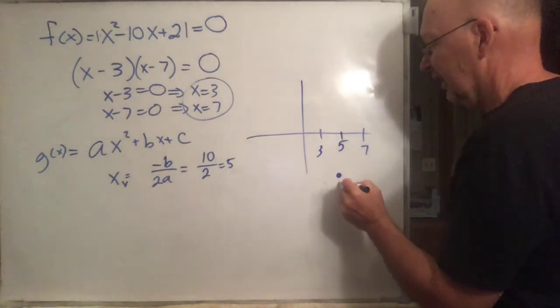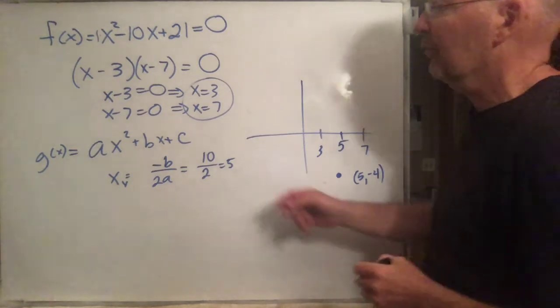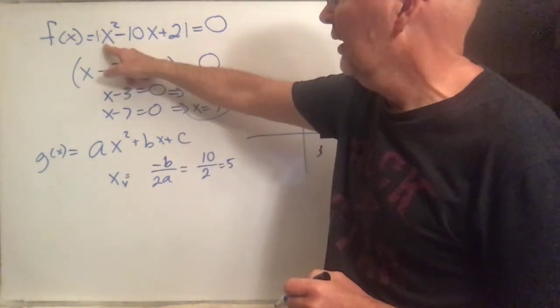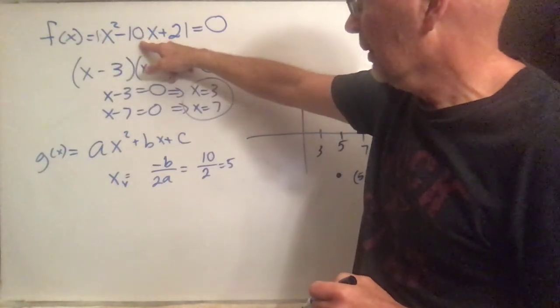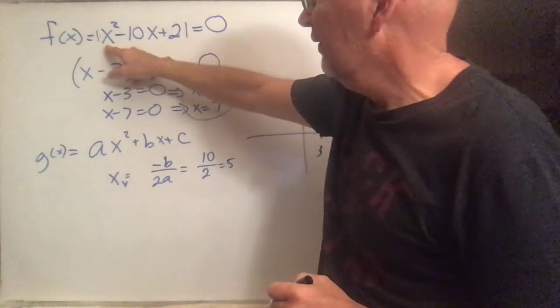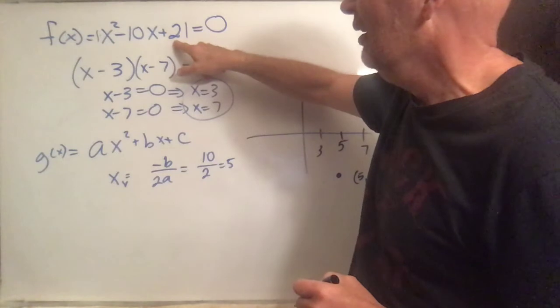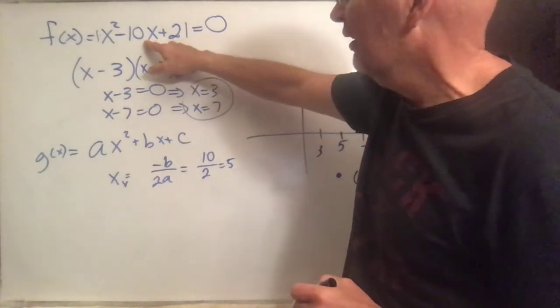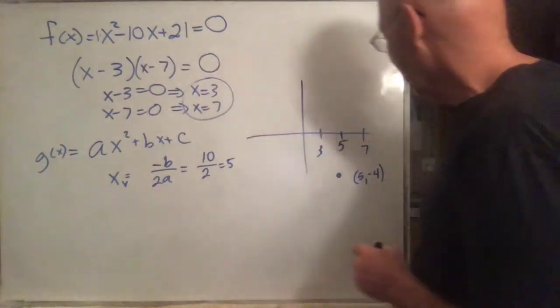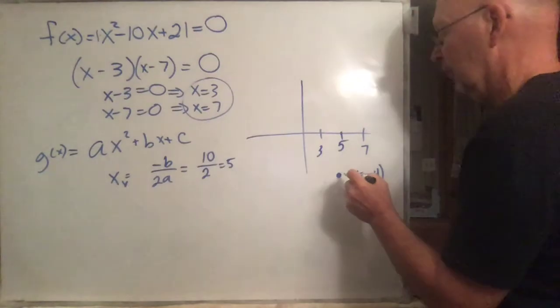So apparently it's down there at 5, negative 4. I could have also stuck the 5 in here: 5 squared is 25, 25 plus 21 is 46, and if you put a 5 in here you're going to get negative 50. 46 minus 50 is again negative 4. So it's a little bit easier to do it this way, isn't it? So anyway, there's your vertex.